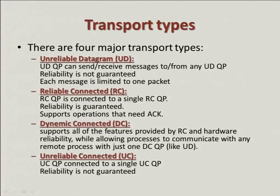Then we have DC — dynamically connected. This is a combination between RC and UD, a newer transport type. It supports all the features provided by RC and hardware reliability, while allowing processes to communicate with any remote process using just one DC QP. If I have a big subnet with 10K nodes and I want one node to communicate with all others, I'd need a lot of QPs which means a lot of connection memory. With DC QP I can connect to one QP at a time, use it as RC QP for reliability, then connect to a new QP without remembering all that connection information.